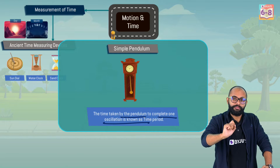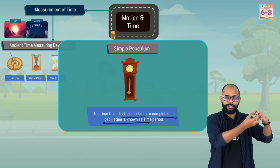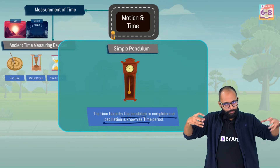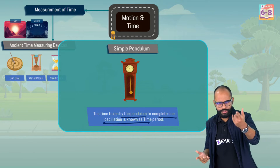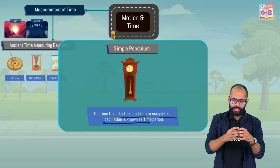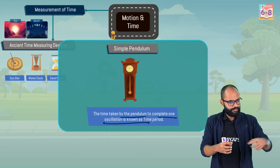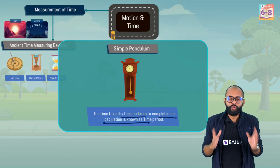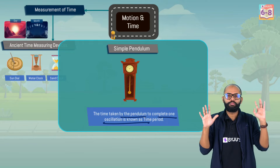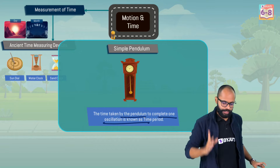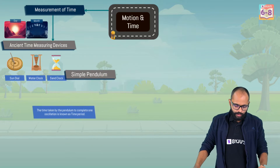The time taken by the pendulum to complete one oscillation is known as time period. One oscillation means from one extreme position back to that same position. You should know how to identify one complete oscillation — that is where the whole mystery lies. One oscillation of time is called time period — it's a very simple but important thing. This is all about simple pendulum.